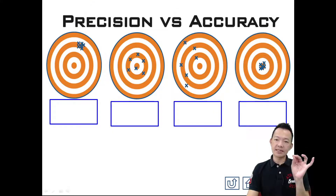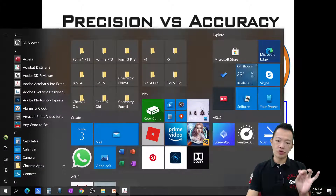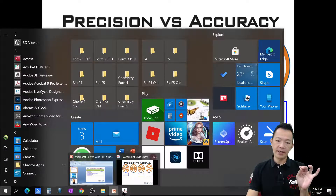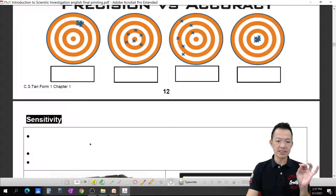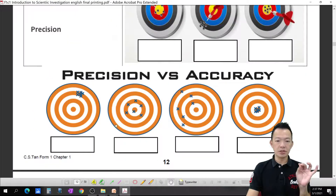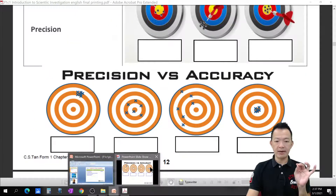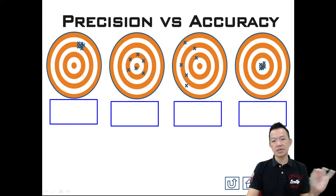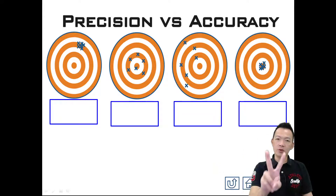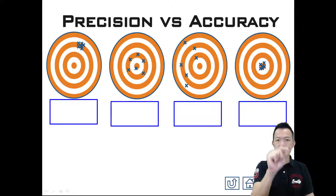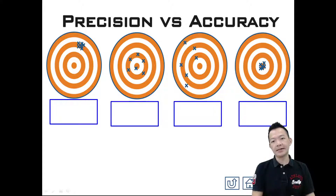Now I have another example on your notes — it should be your page number 13. Fill in the blank. Just tell me two words: accurate — does it have accuracy? Precise — does it have precision? Yes or no, that's all.